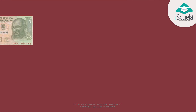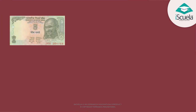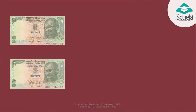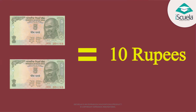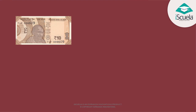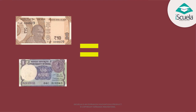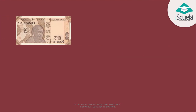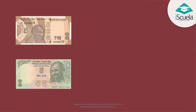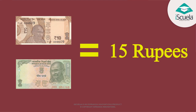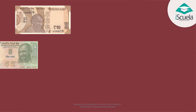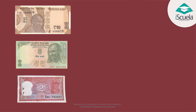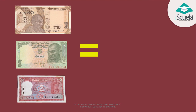Similarly, currency notes of Rs. 5 and another 5 make Rs. 10. And currency notes of Rs. 10 and Rs. 1 make Rs. 11. Similarly, currency notes of Rs. 10 and Rs. 5 together become Rs. 15. Currency notes of Rs. 10, Rs. 5, and Rs. 2 become Rs. 17.